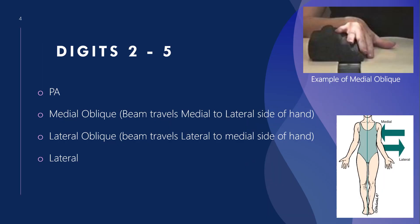For digits two through five we have four views: PA, medial oblique, lateral oblique, and lateral. For the medial and lateral obliques, remember anatomical position — the beam travels through the hand anatomically. For the medial oblique, the beam travels medial to lateral; for the lateral oblique, the beam travels lateral to medial.